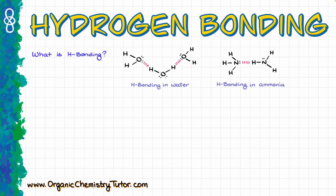In general chemistry, you were most likely just given an example of water and maybe ammonia, and that was about it. And now, when we are in organic chemistry, most instructors assume that you already know what hydrogen bonding is, and hence they are not really going to spend much time on that.